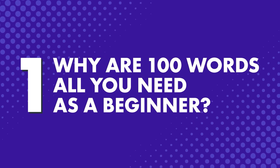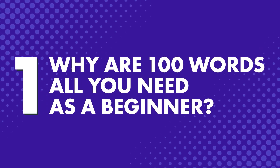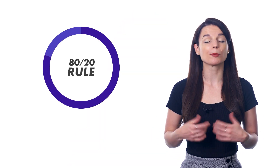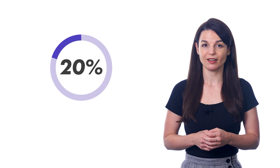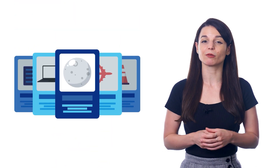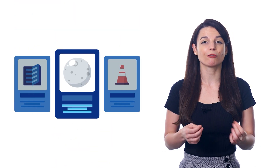First, why are 100 words all you need as a beginner? Because overwhelming yourself with 1,000 words is not a good way to learn. And because of something called the 80-20 rule, or the Pareto Principle. This states that 80% of your progress and results will come from just 20% of what you've done, meaning you'll get the best results from focusing on a few things instead of trying to do everything.